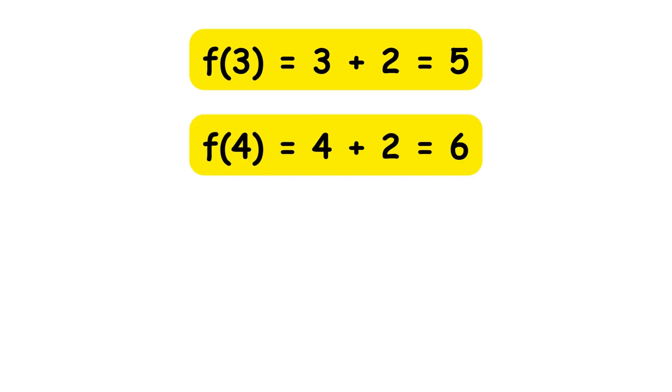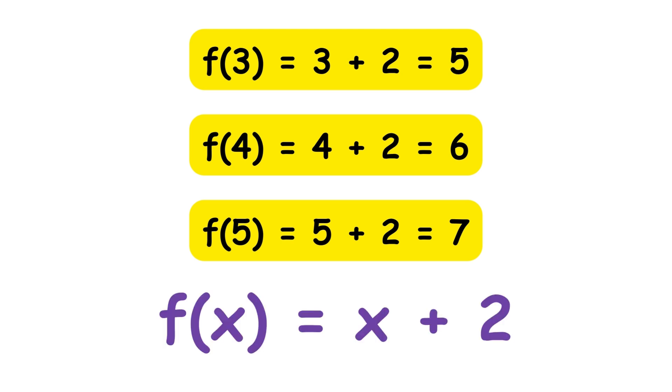f of 4 equals 4 plus 2 equals 6. f of 5 equals 5 plus 2 equals 7. We can write a general definition for this function using a variable: f of x equals x plus 2.